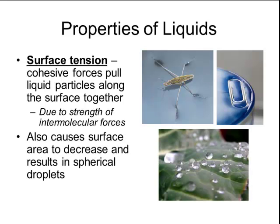Surface tension also causes the surface area to decrease, and this results in spherical droplets. When it rains, water droplets tend to bead up due to their cohesive forces to each other, causing them to stick together and decrease their surface area.